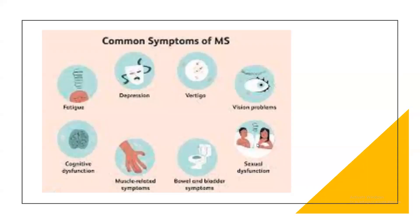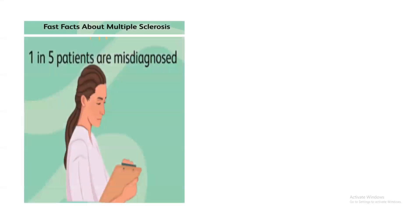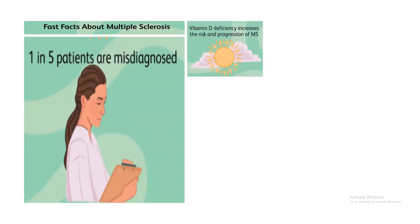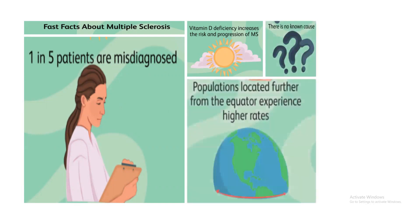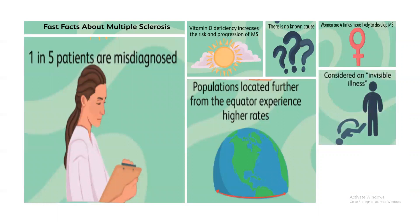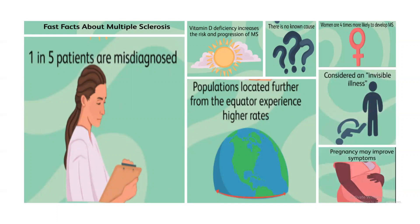Symptoms of multiple sclerosis include fatigue, depression, vertigo, vision problems, sexual dysfunction, bowel and bladder problems, muscle-related symptoms, and cognitive dysfunction. Fast facts: one in five patients is misdiagnosed. Vitamin D deficiency increases the risk of MS progression. Populations further from the equator experience higher rates. Women are four times more likely to develop MS, and it is considered an invisible illness. Pregnancy can improve MS symptoms.